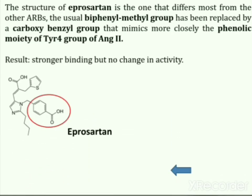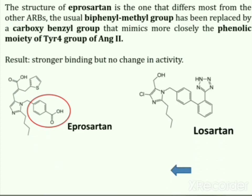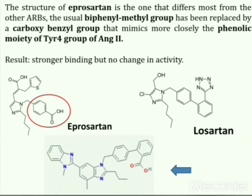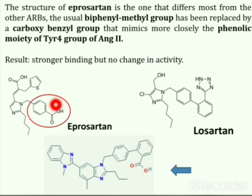Eprosartan differs most from the other angiotensin receptor blockers. In this compound, the usual biphenyl methyl group has been replaced by a carboxybenzyl group that more closely mimics the phenolic moiety of the tyrosine-4 group of angiotensin II. The result of this change is a stronger binding of eprosartan to the receptors, but the biochemical and physiological effects are not significantly improved.